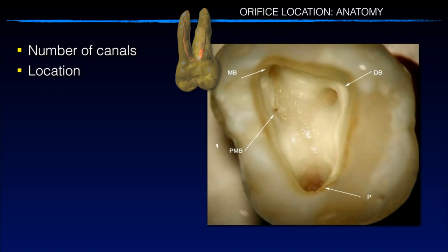I'll use this maxillary first molar as an example. You have the palatal root, which is fairly easy — it's large, sometimes with a little apical curvature. Then you have the distal canal, which is medium-sized, medium difficulty. Then the mesial buccal canal, which is very hard — it's curved and tight, even in young patients. And then you have the MB2 or PMB, this fourth canal, which is very difficult. The same tooth gives you several examples of anatomy that can be applied to any tooth.